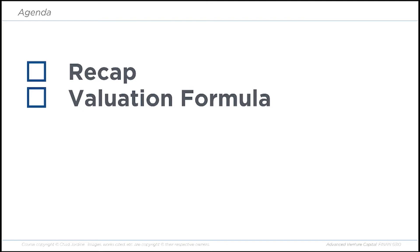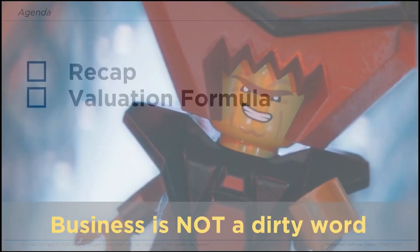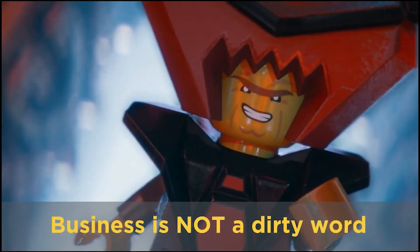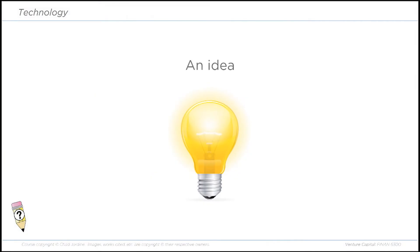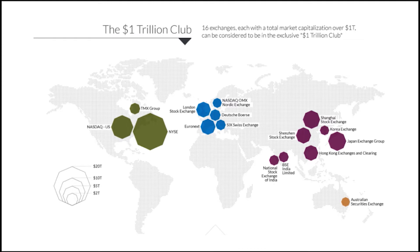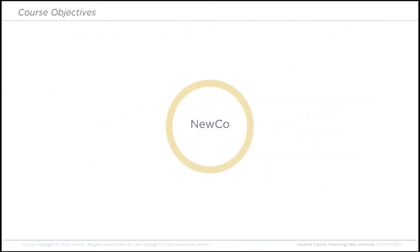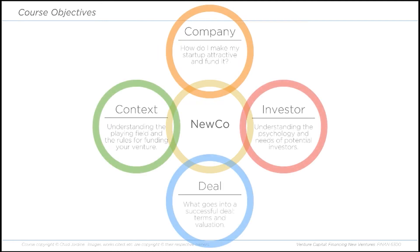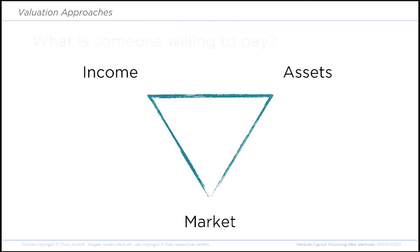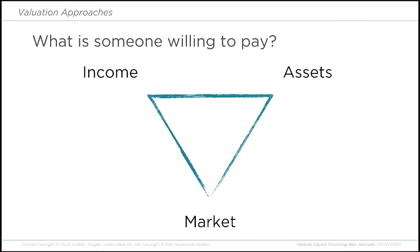We're going to recap what we covered in the previous videos and then talk this time about the valuation formula. We learned that business is not a dirty word. We learned that technology is about an idea for making things better and an execution of that idea. We spoke about how public markets are the most advanced technology for funding companies, and how the context of this course is understanding the company, the context, the investor, and the deal. We talked about three main types of asset valuation: income, asset, and market approach, and how most startup valuation techniques are rooted in the market-based approach.